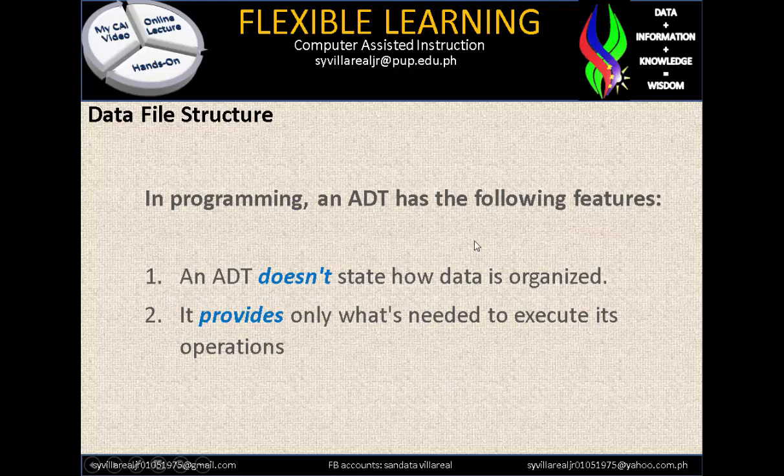In programming, an ADT has the following features. An ADT doesn't state how the data is organized — no need to specify how the data is saved, how to recall it, or how to modify it. It provides only what's needed to execute its operations. For example, one programmer created a game. The user doesn't know how to code or create a game, but the function itself is the game, so the user can play it without knowing what is going on inside the code.